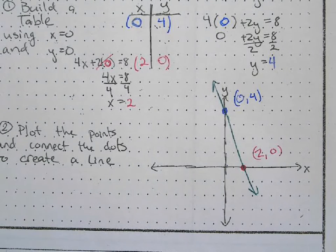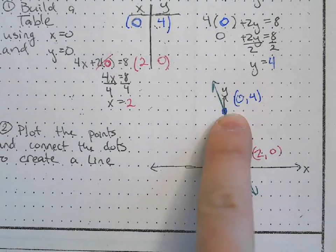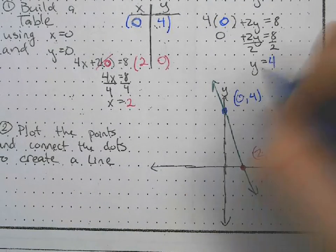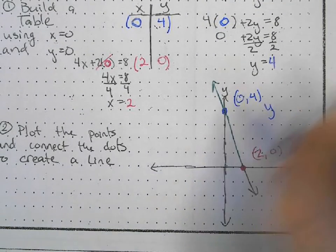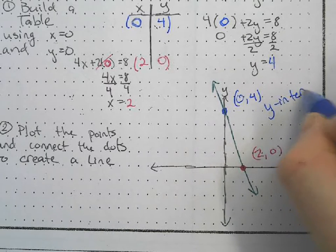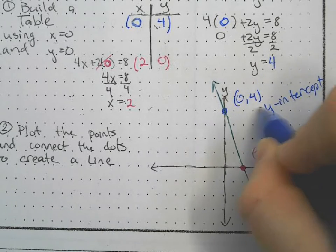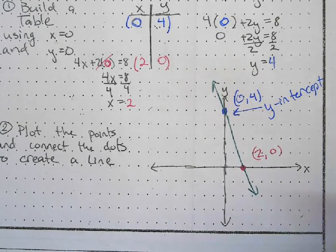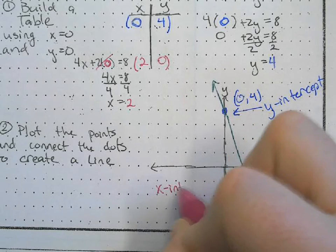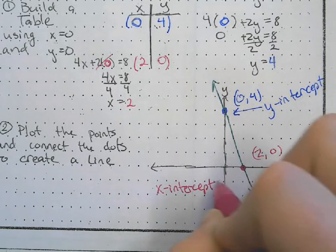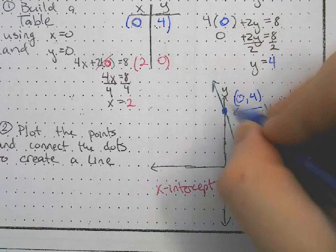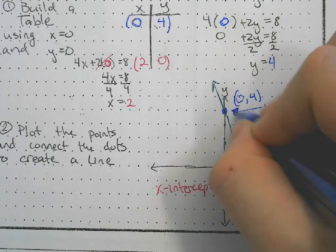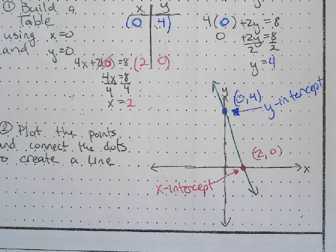The last thing I want to do is label each intercept. This one is our y intercept, crossing the y axis. And this one is our x intercept.